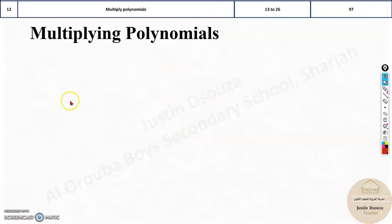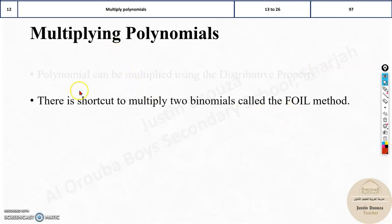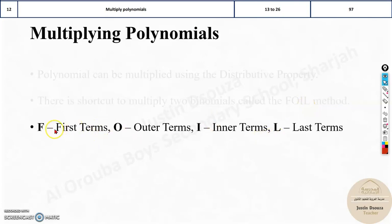We move on to the twelfth topic, that is multiplying polynomials. This is a pretty easy topic. If you know the distributive property, it is what we are doing now. When there are two binomials, we can use a FOIL method, which we will see now.